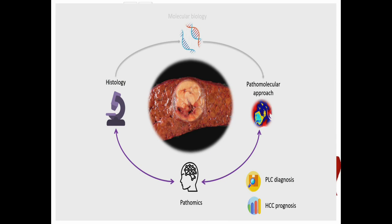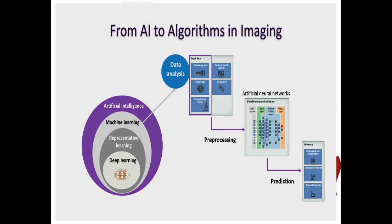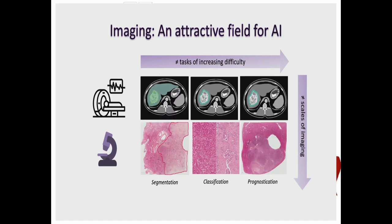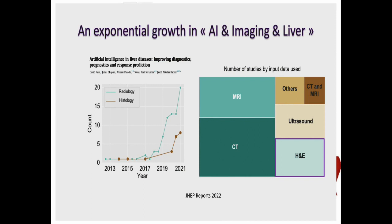In the second part, I would like to show the potential impact of artificial intelligence, illustrated with two clinical issues: diagnosis of primary liver cancer and prognosis of HCC. Artificial intelligence-based machine learning approaches are very powerful for processing large amounts of data from different imaging modalities. Imaging is an attractive field for artificial intelligence, as it allows tasks of increasing difficulty at different scales — including segmentation, classification of lesions, and prognostication. You can see the exponential growth of studies combining AI, imaging, and liver.